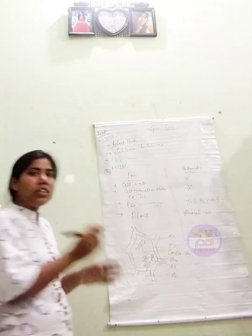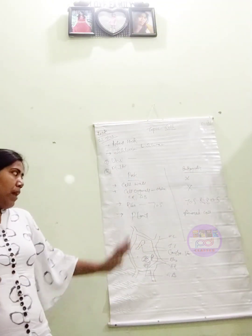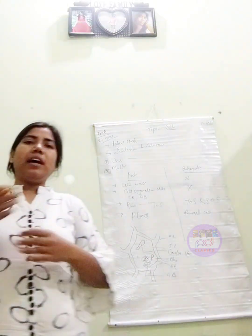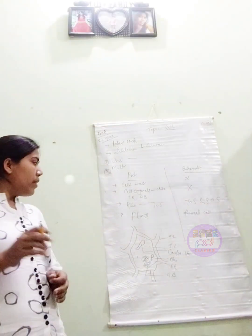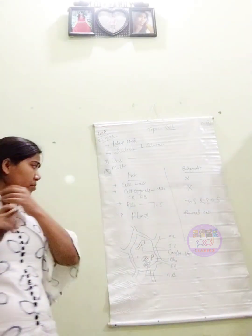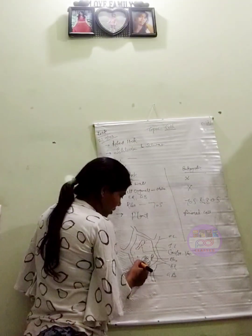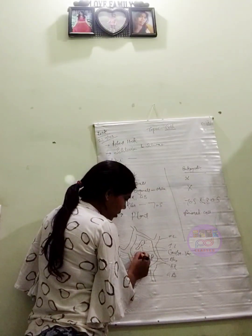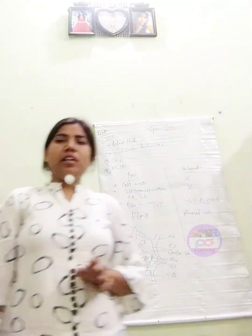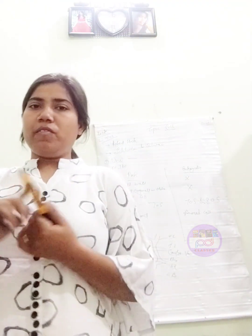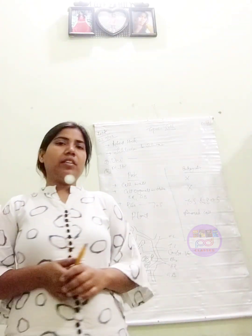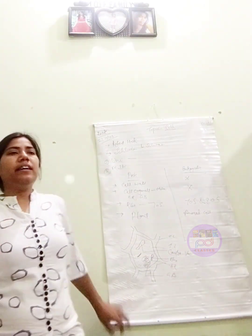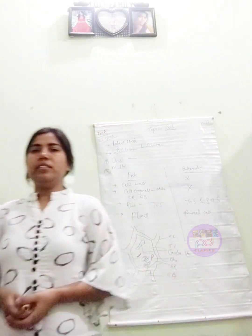The cytoplasm of a cell contains some other vacuoles — food vacuoles and water vacuoles. The nucleus is also present in animal cells, in which DNA and chromosomes are found. So, these are all the basics about the cell. Thank you, class.